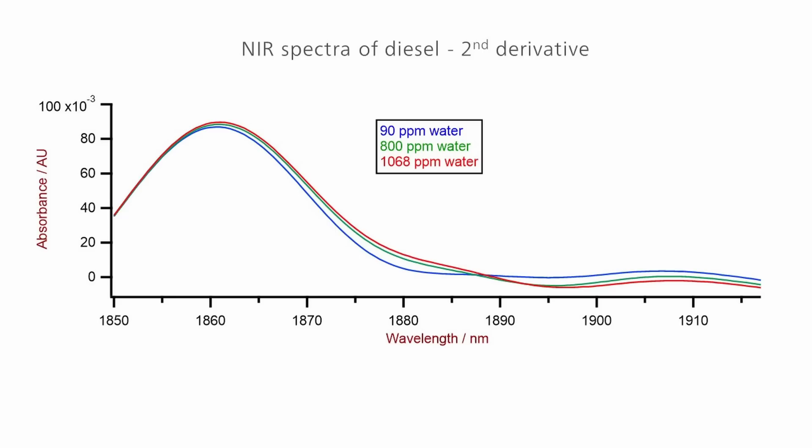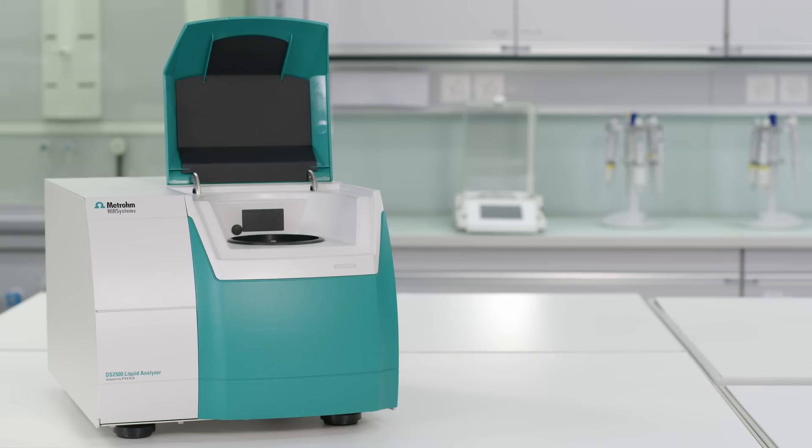For example, the OH bond vibrations are used to determine the moisture content in samples. The more moisture in the sample, the more NIR light is absorbed in the specific wavelength region.